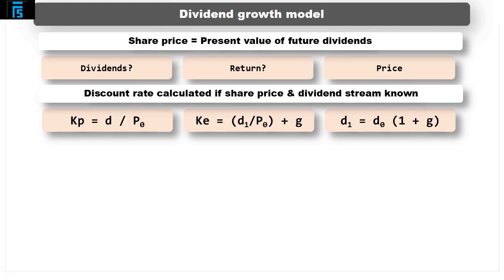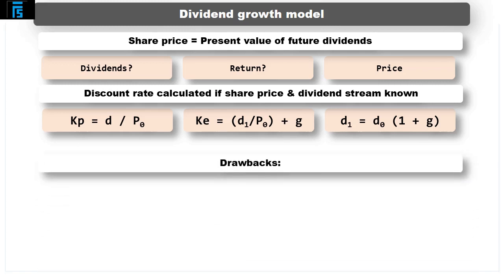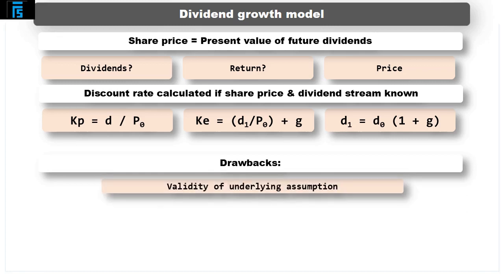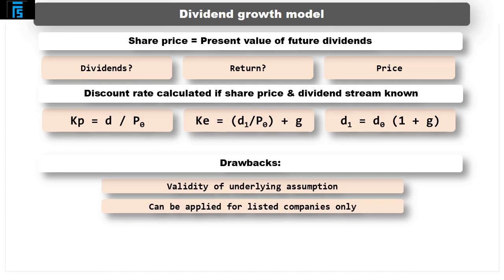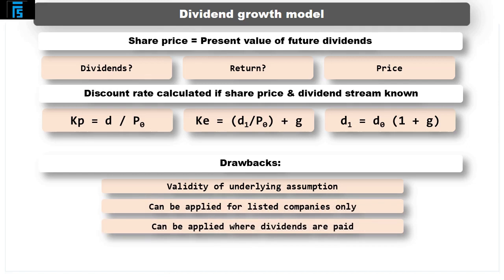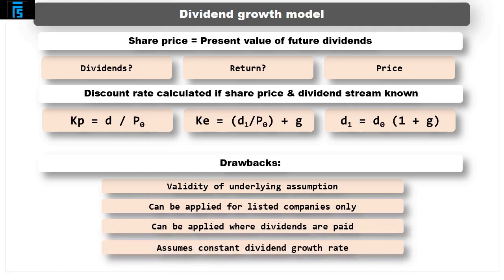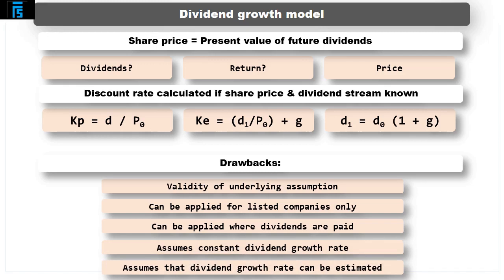The drawbacks of this approach are: 1. the validity, or otherwise, of the underlying assumption of the investor's thought process discussed above; 2. it can only be applied to companies whose shares are listed and regularly traded — i.e. they have an accurate share price; 3. it can only be applied to companies who pay a dividend; 4. it assumes that dividend growth rates are constant; 5. it assumes that the dividend growth rate can be estimated. This last point is discussed further below.